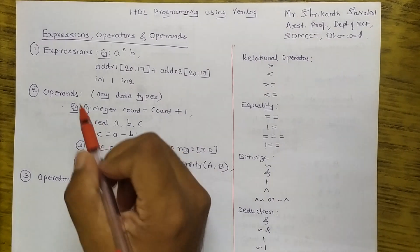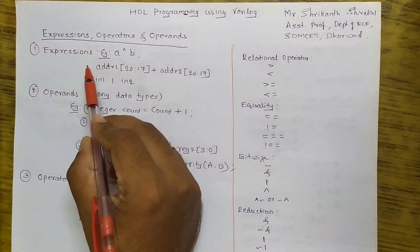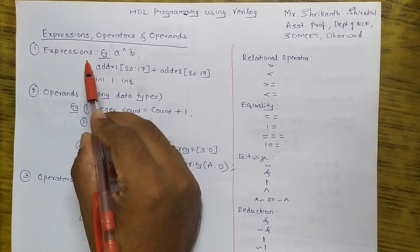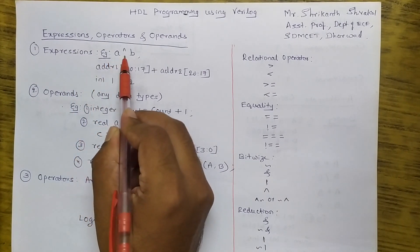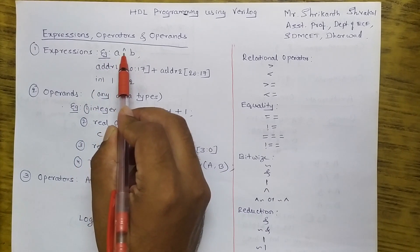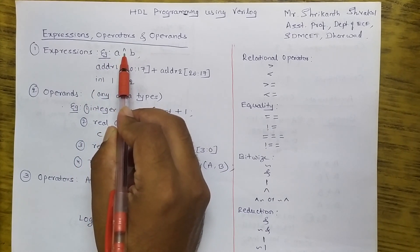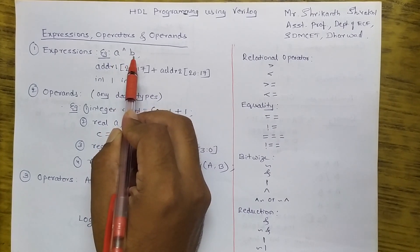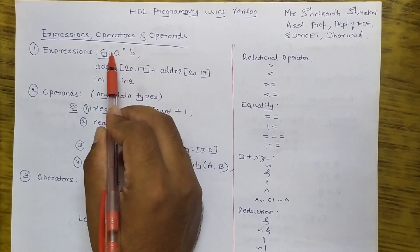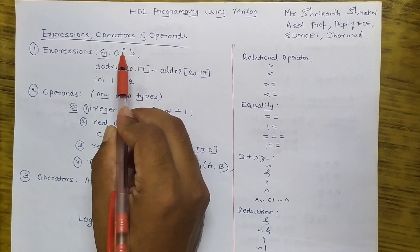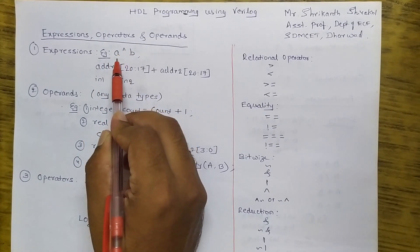First we'll look into expressions. Expressions are constructs that combine operators and operands. Here, XOR is an operator, the symbol is an operator, and A and B are operands. In total, an expression is a combination of operators and operands.